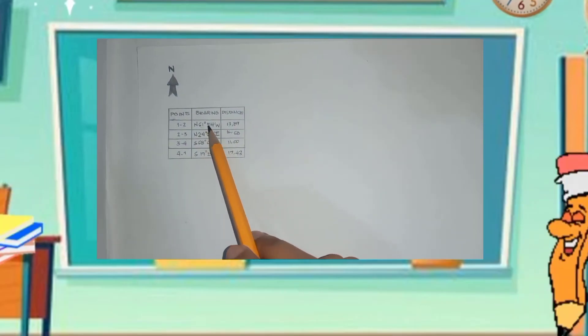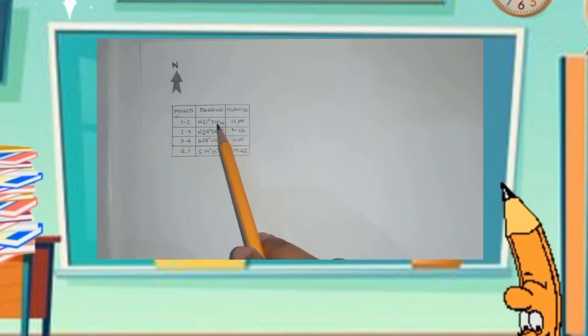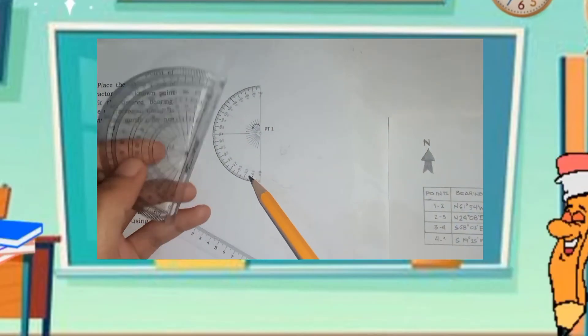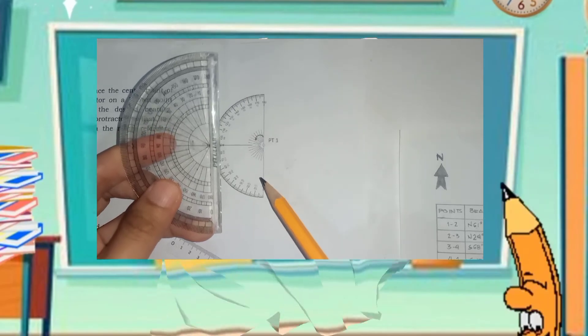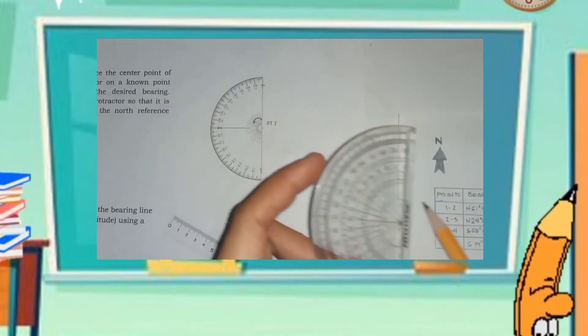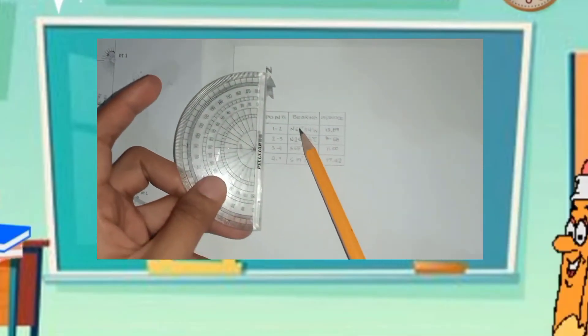The first bearing, 61 degrees 54 minutes north, due west. Find the 61 degrees on the protractor as shown in the video.